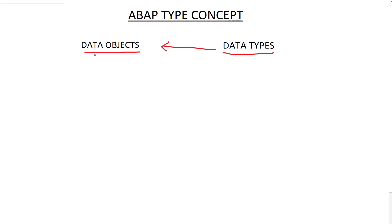In short, data objects are the actual physical memory locations defined in your program, and to define them we specify technical attributes derived from data types. To define a data object we use the keyword DATA. Data types are more like templates — they do not actually occupy any memory in the program. We simply use them so that we can refer our data objects to these data types. The keyword used to define a data type is TYPES.